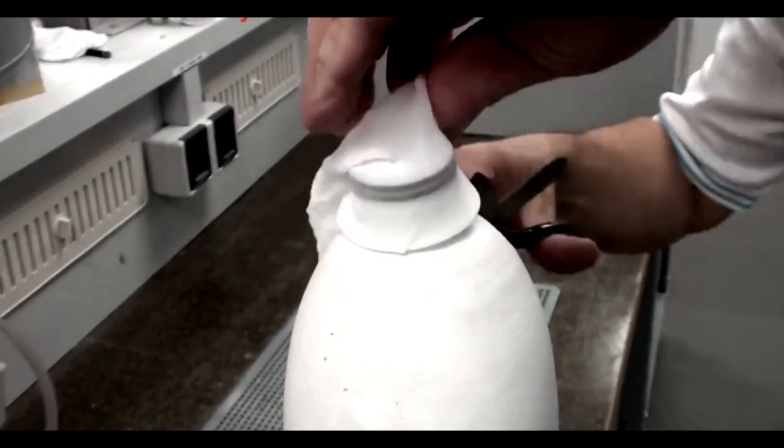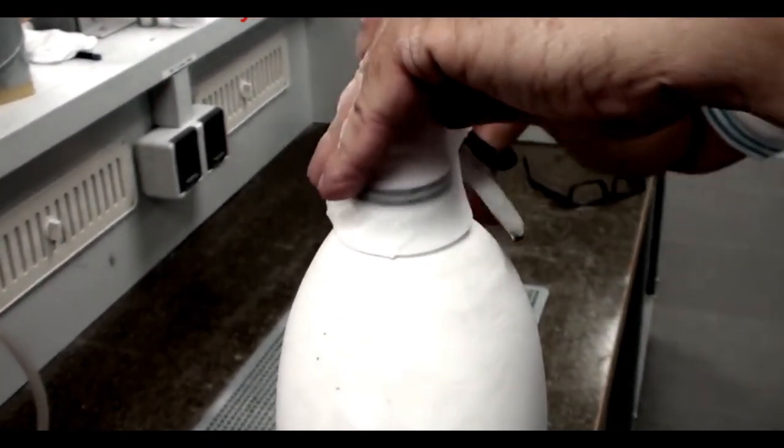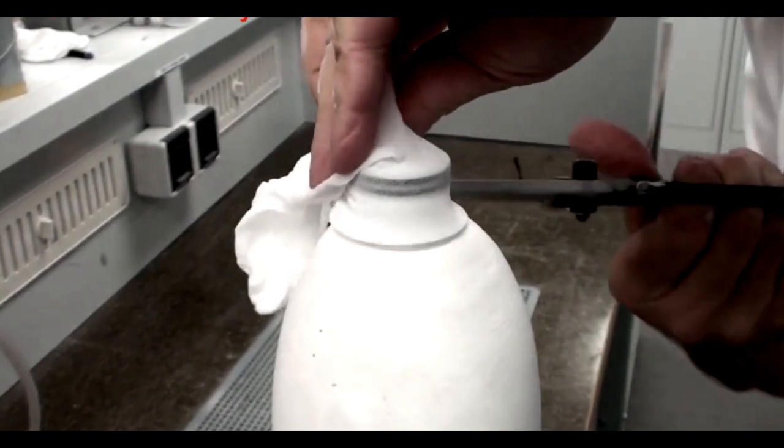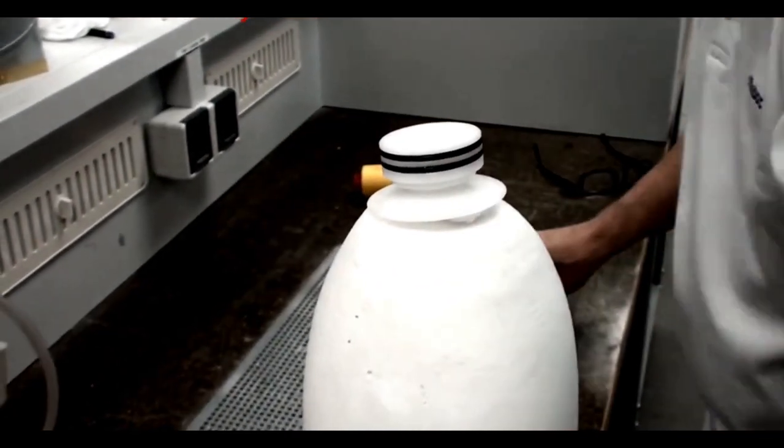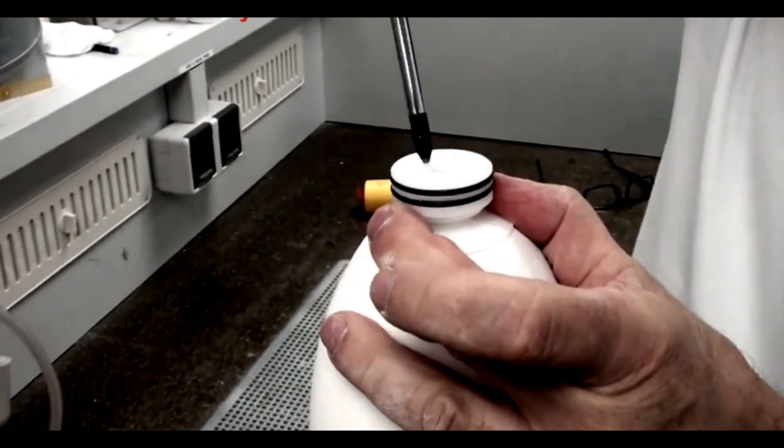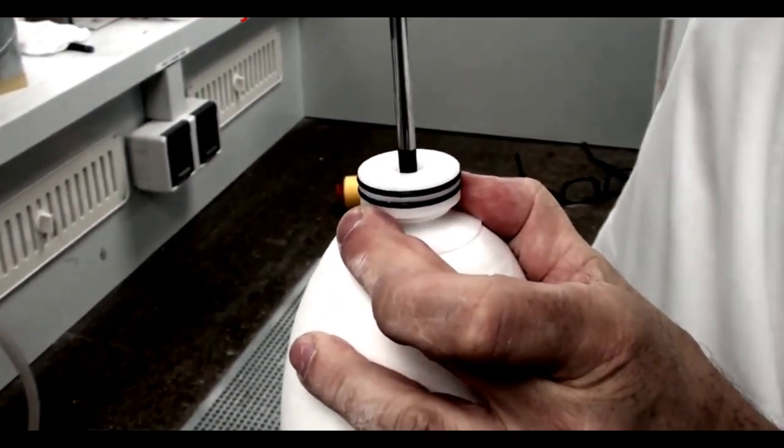Trim off all the excess nylon stockinette to expose the lamination dummy. Finish securing the lamination dummy to the positive model.